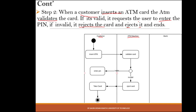Once the ATM validates the card, a decision node (guard node) is used. If the card is valid, an arrow goes back to the customer swimlane prompting them to enter the PIN. If the card is invalid, the card is rejected and ejected, and a final state symbol is placed there — meaning the process ends and there is nothing more the customer can do.